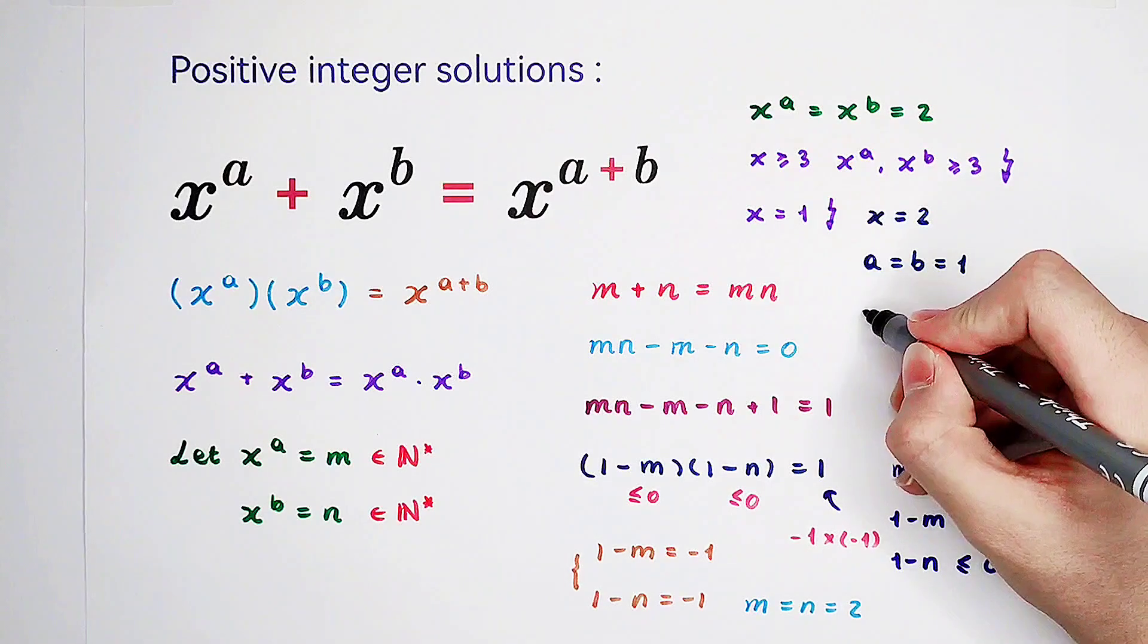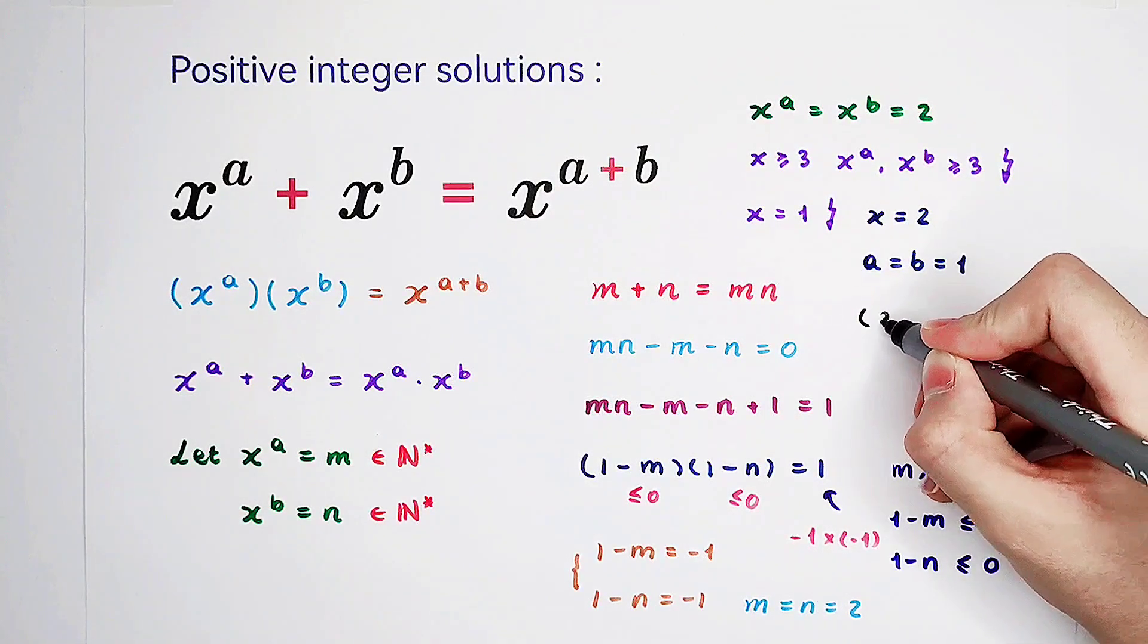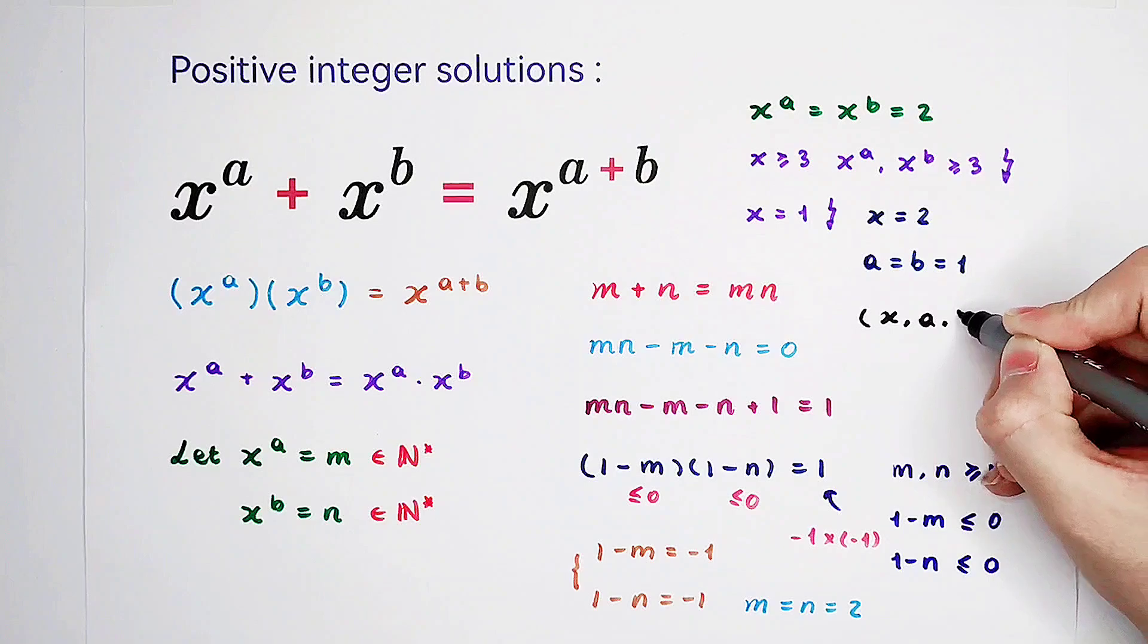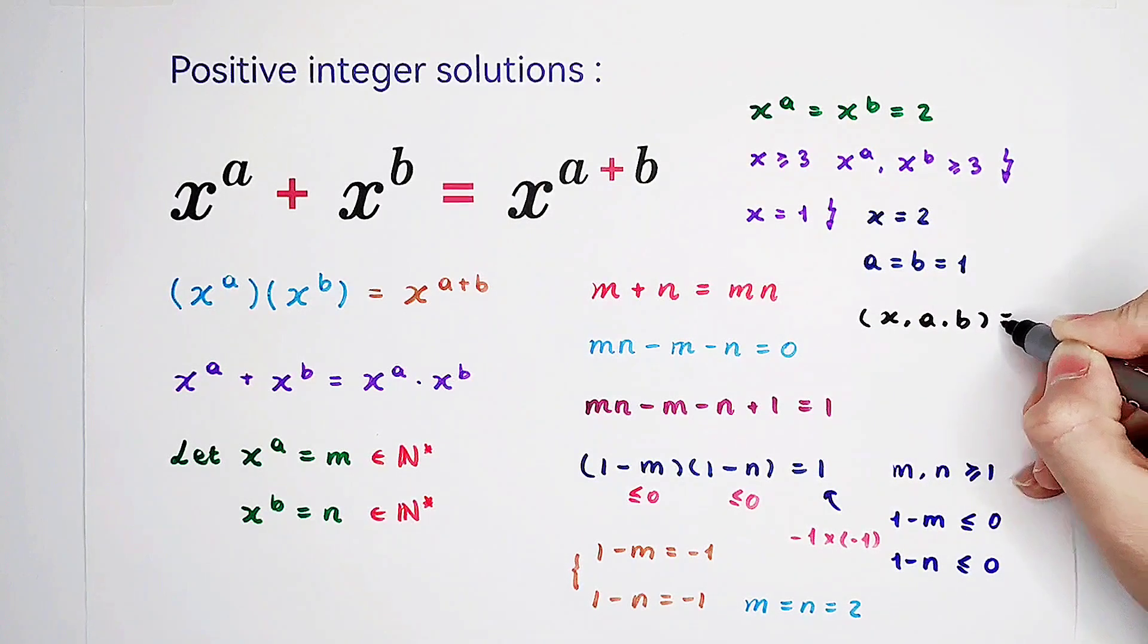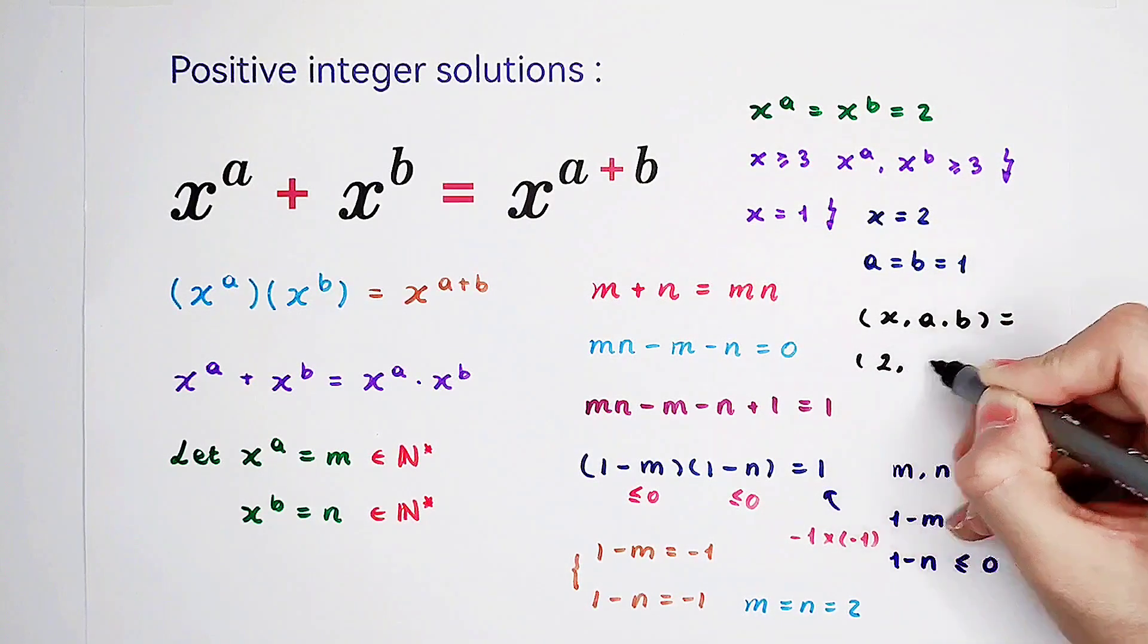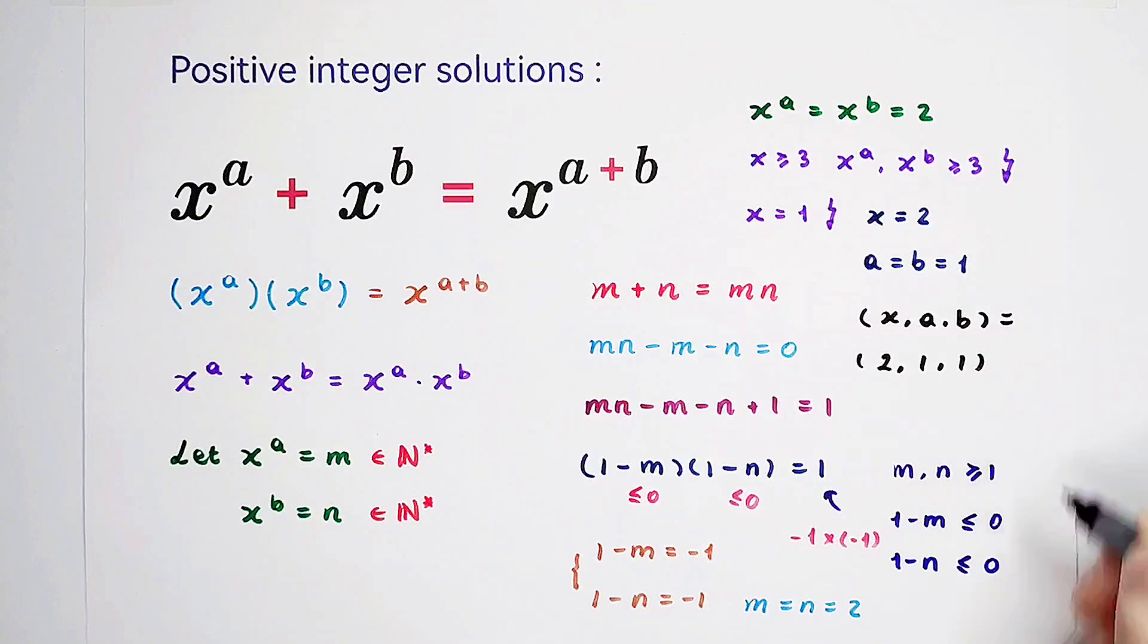So our answer is x, a, b is 2, 1, 1. Only one solution pair. Did you get it? Give me a thumbs up. Subscribe to me for more wonderful questions. We'll see you next time. Bye-bye.